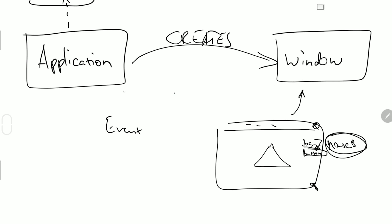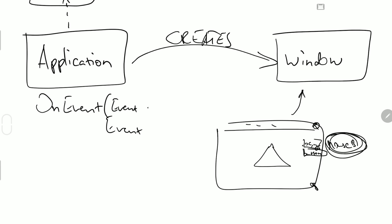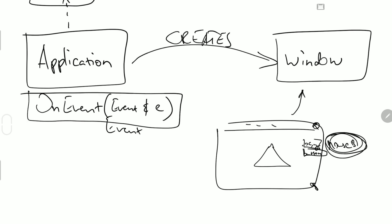We don't want window to hold an application pointer. Instead, what we want to do is give the application the opportunity to provide window with a callback — something as simple as a function pointer. Essentially, when we create a window from our application class, we're also going to set a callback to that window class, an event callback. So every time this window gets an event, it can check if the callback is present and, if it isn't null, call the callback with this event data. Since application will have a function called onEvent which takes in an event reference, window will call this function with the event data.